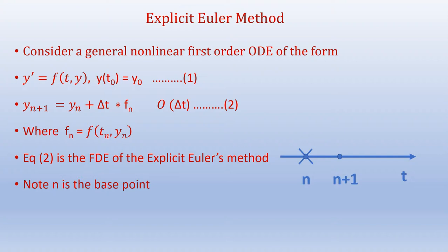We will now briefly look at the explicit Euler method. For a general non-linear first-order ODE of the form y' = f(t, y) with initial condition y(t₀) = y₀, the explicit Euler method gives: y_{n+1} = y_n + Δt · f_n, which is of order Δt. Here f_n = f(t_n, y_n). This is the finite difference equation of the explicit Euler method, where n is the base point.